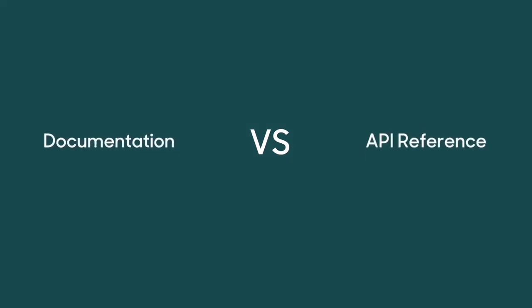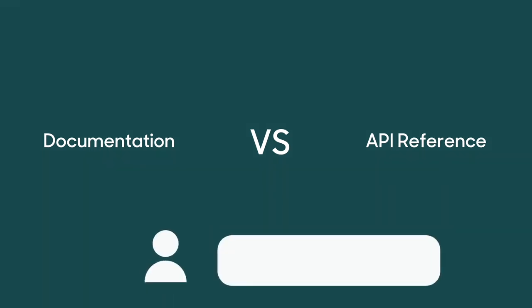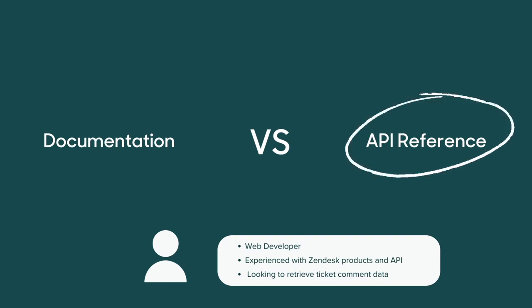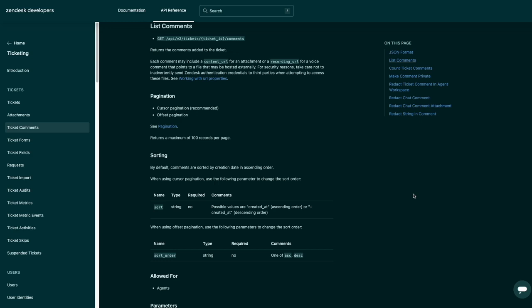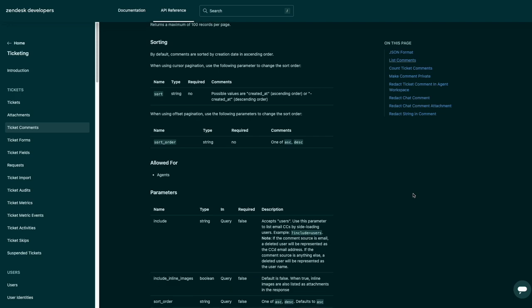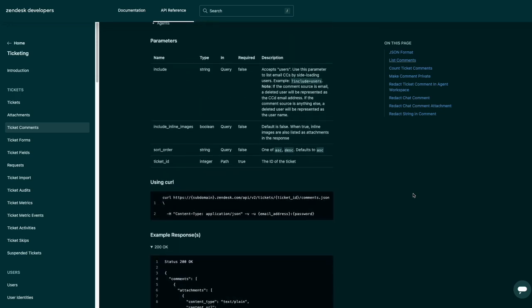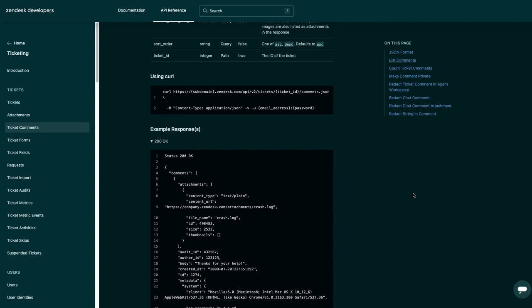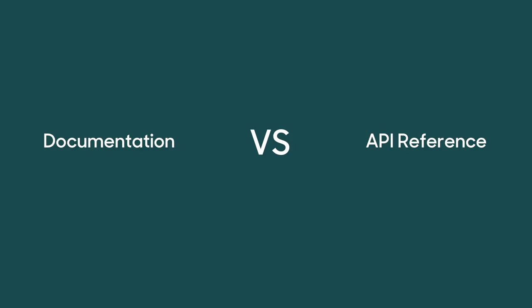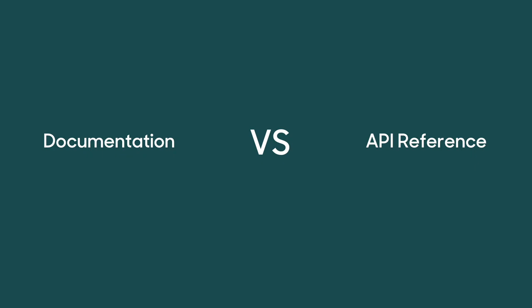Let's test our knowledge by looking at a few Zendesk customer scenarios. Tipne is a web developer who's familiar with Zendesk products and has some experience making calls to our API. He'd like to know if it's possible to get the comment data for a specific ticket — which category would you suggest? If you thought API Reference, you're 100% right. Since Tipne has used our API, he just needs to look at our ticketing endpoints to verify it's possible, get the exact endpoint, and see an example response body.